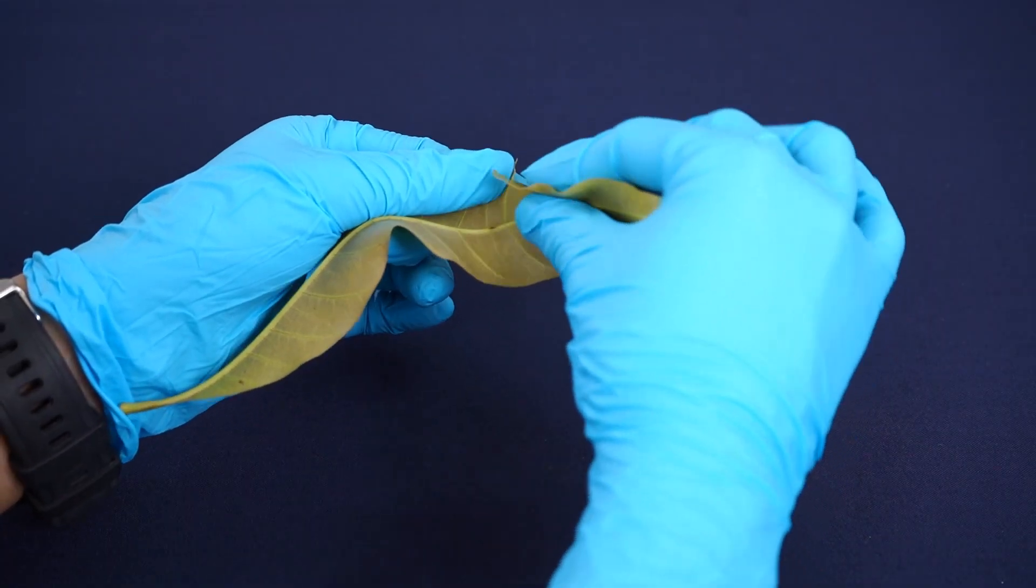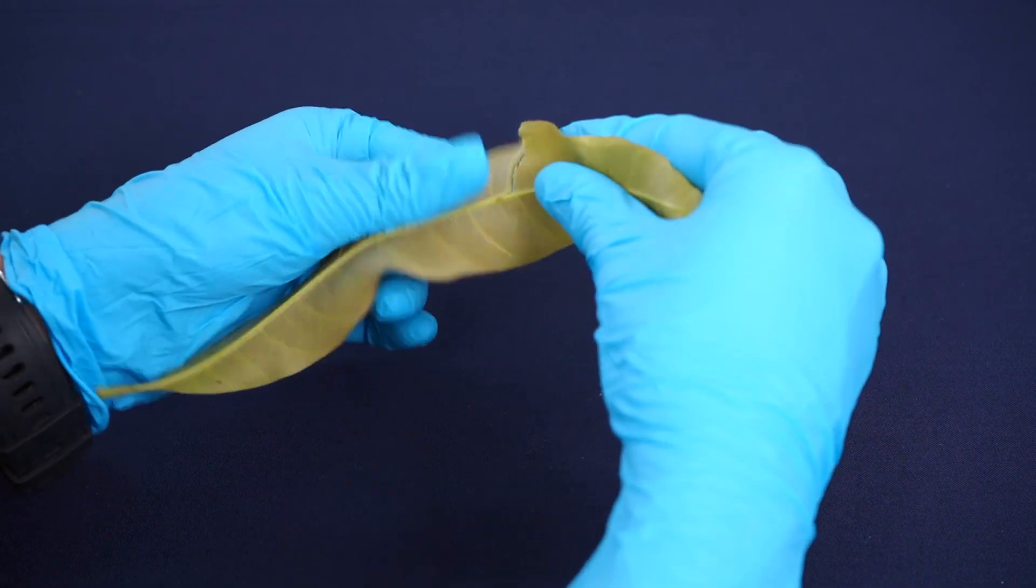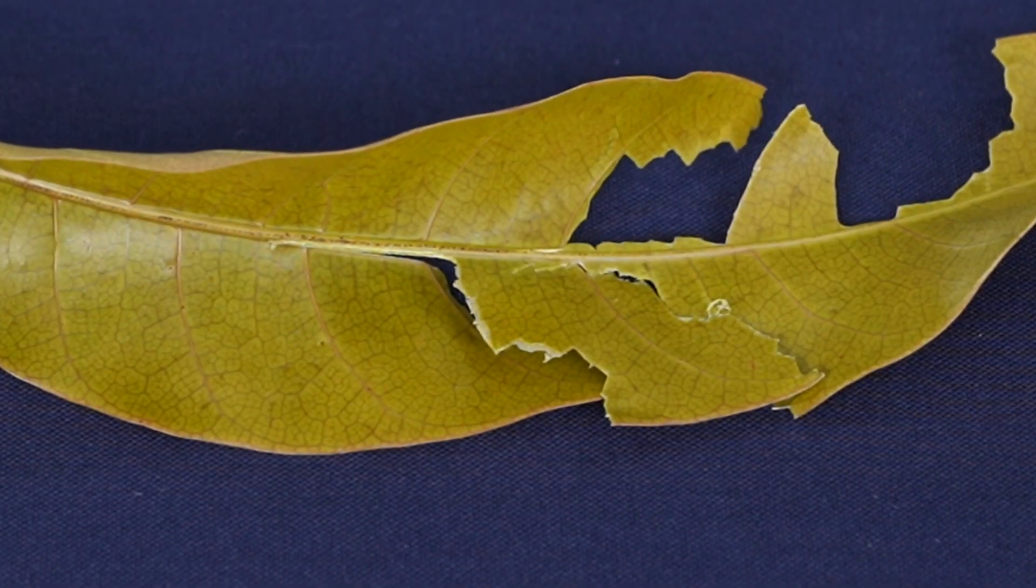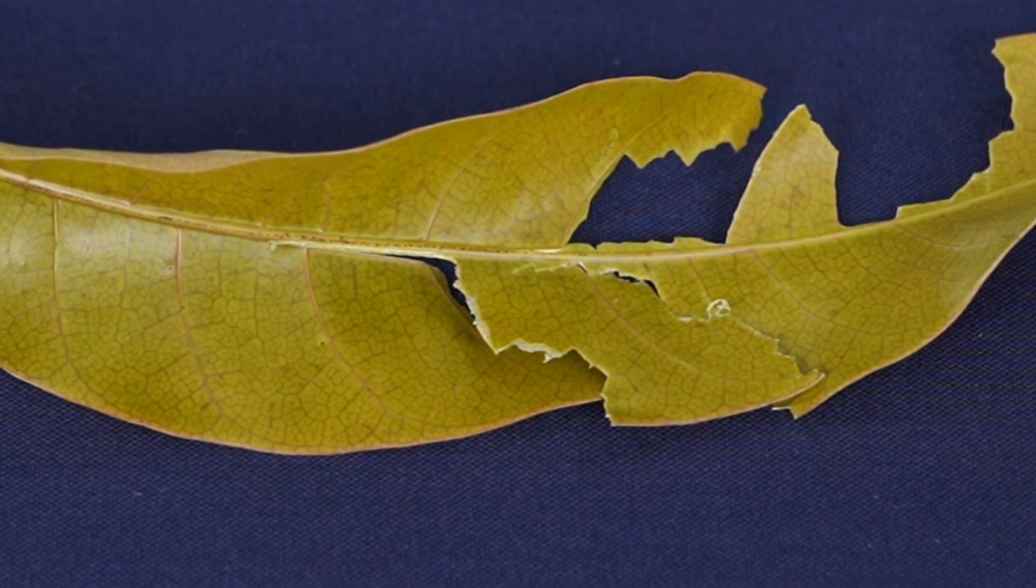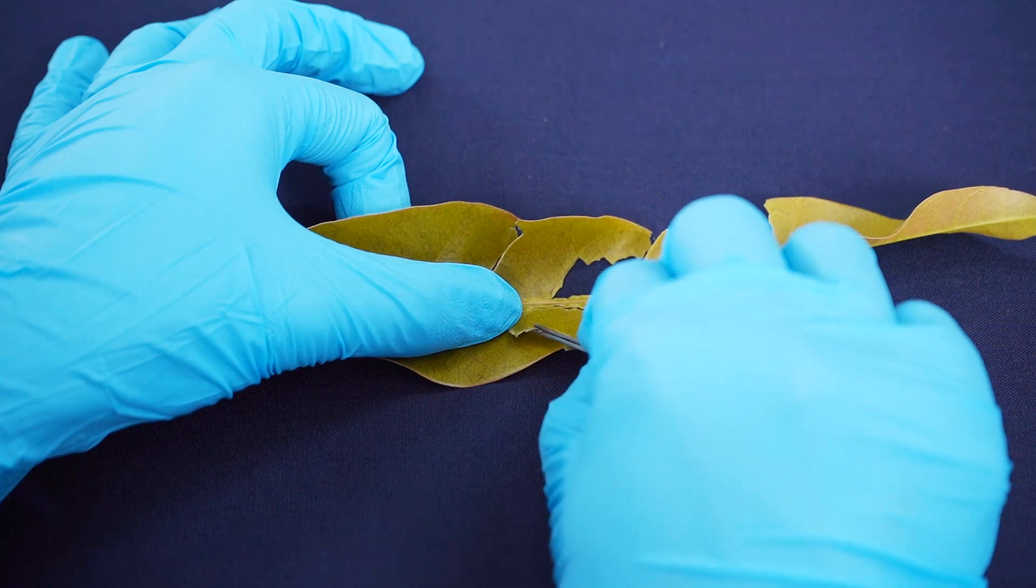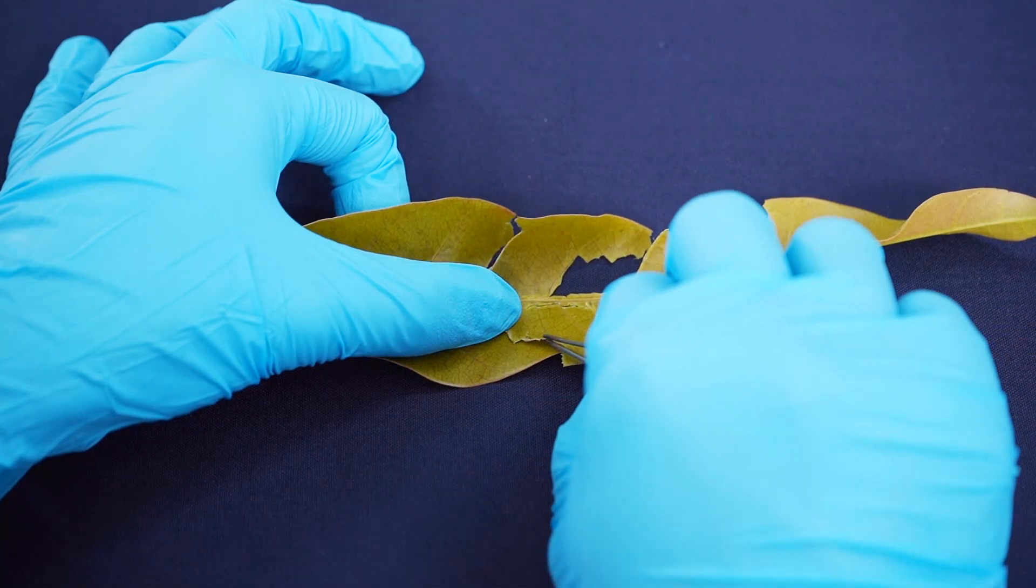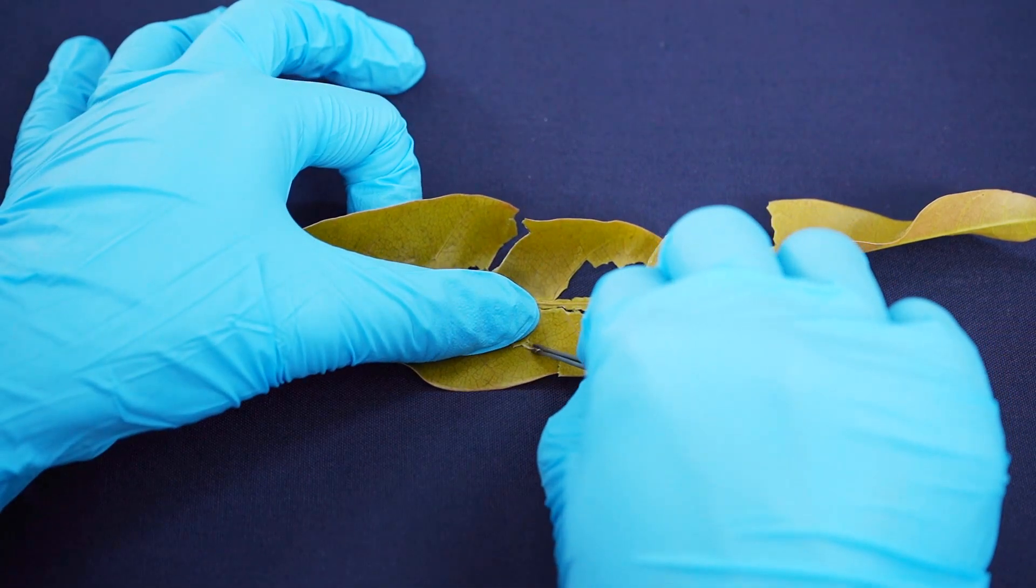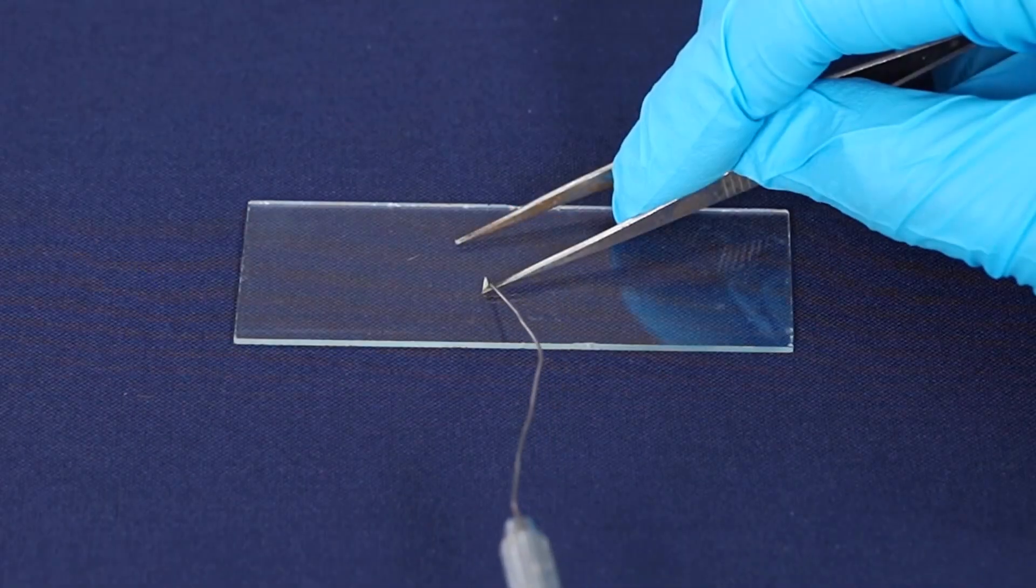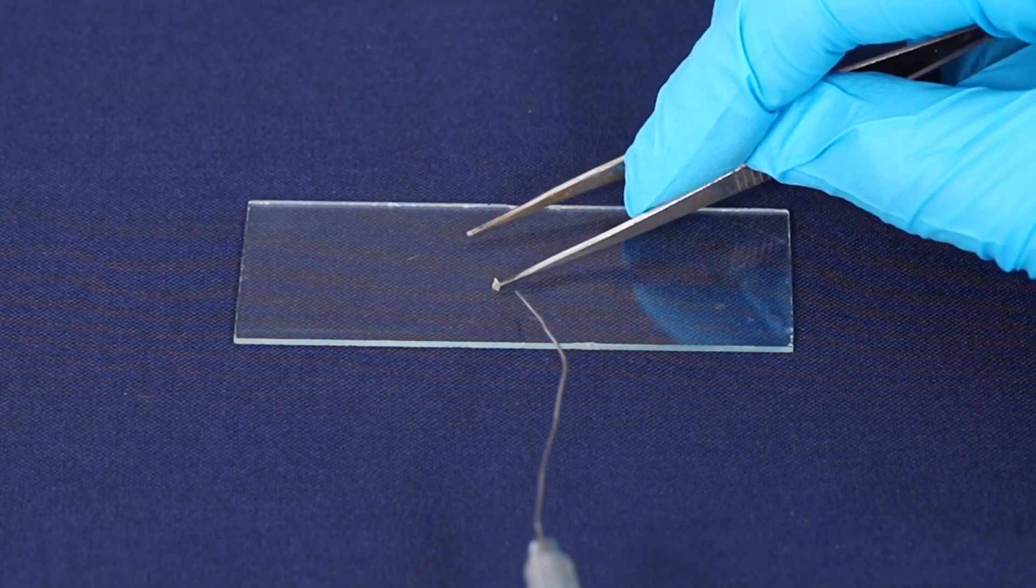Fold the leaf and tear along the lower side of the leaf. You will notice a thin peel on the edges of the torn portions of the leaf. Using the forceps, pull out the thin transparent layer from the lower epidermis of the leaf. Place the epidermis layer on a clean glass slide.